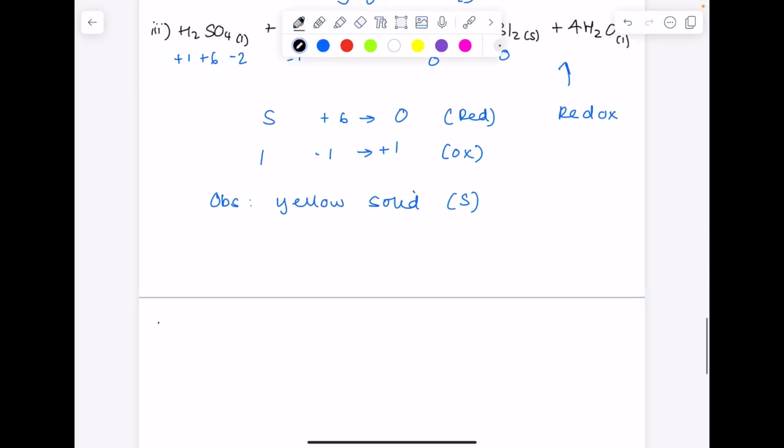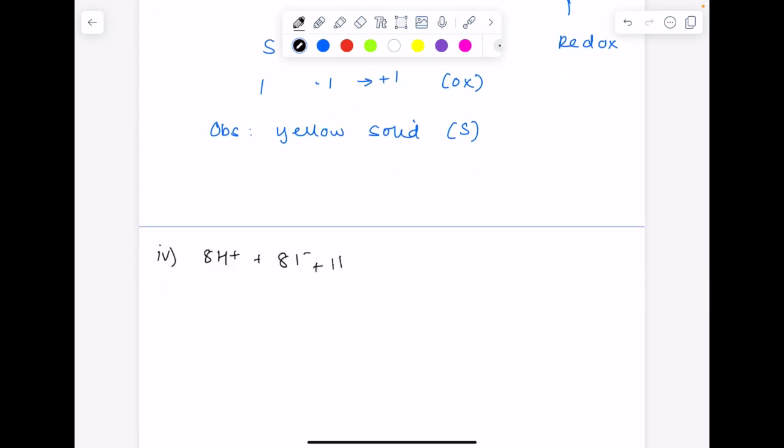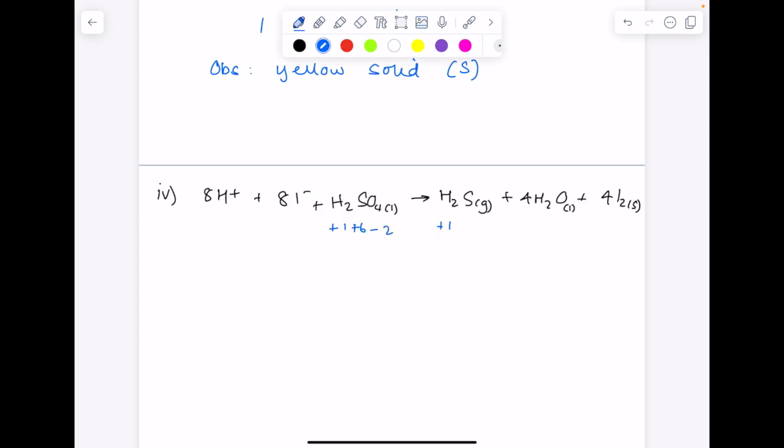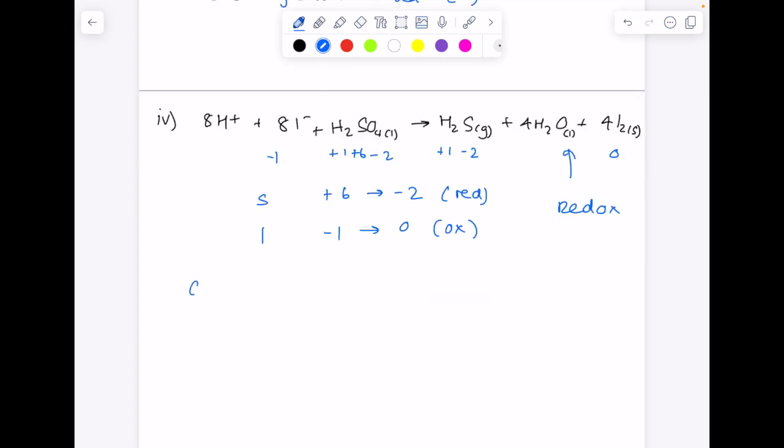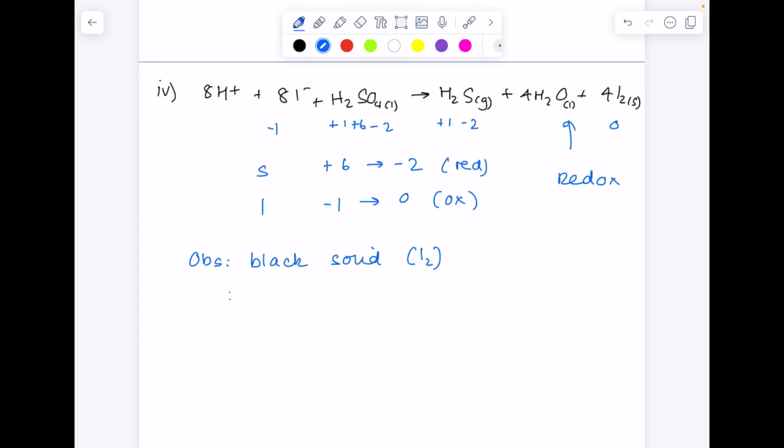I promise we're nearly there. What about equation four? So our sulfur has been reduced. Its oxidation has fallen from plus six to minus two. The iodine has gone from minus one to zero. So that's oxidation. So another redox reaction. In terms of observations, we get a black solid, which is I2. We also get an eggy smell from the stinky hydrogen sulfide gas.